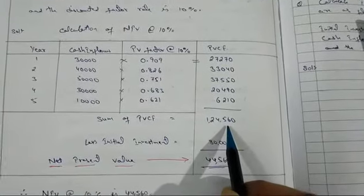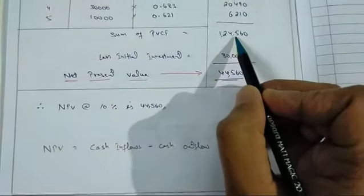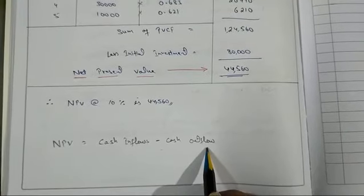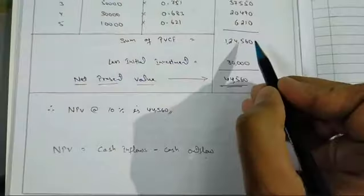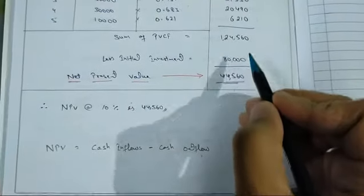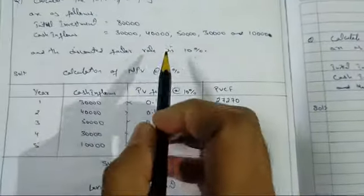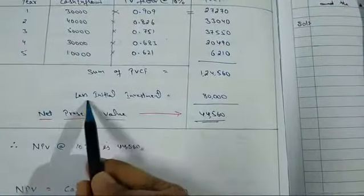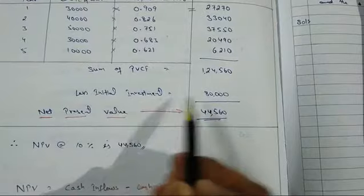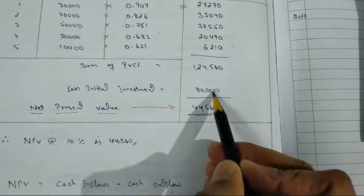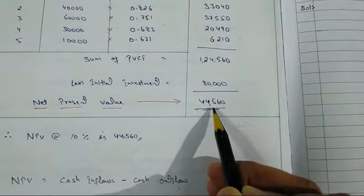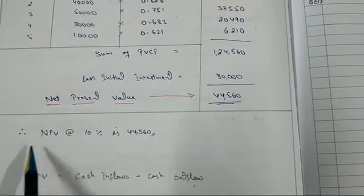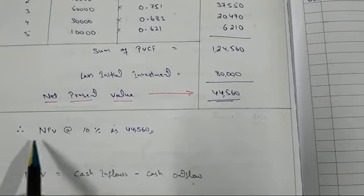The formula for NPV is: cash inflows minus cash outflows. The cash outflow here is the initial investment of 80,000 as given in the problem. When we subtract the initial investment of 80,000 from the sum of present values of cash inflows, the answer comes to 44,516 — that is the Net Present Value.